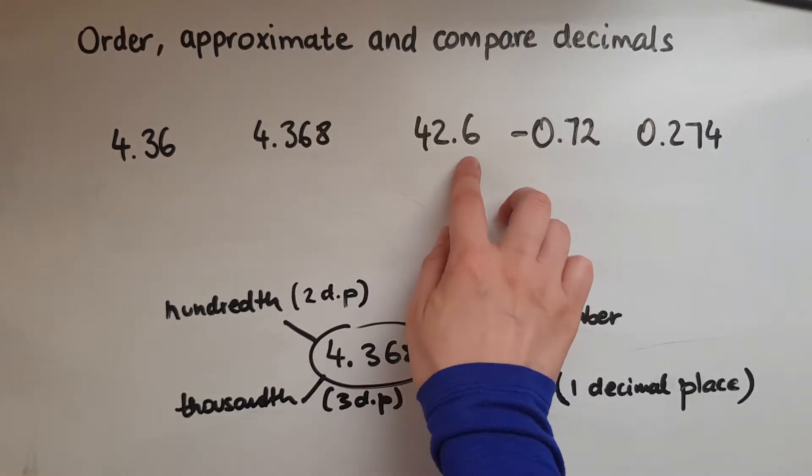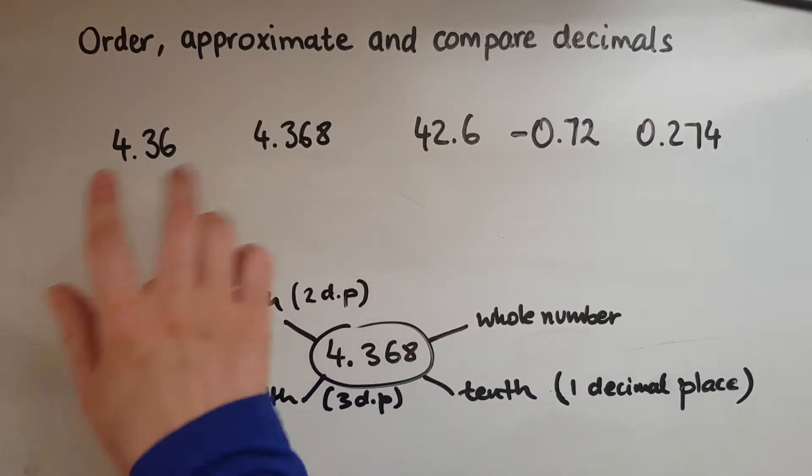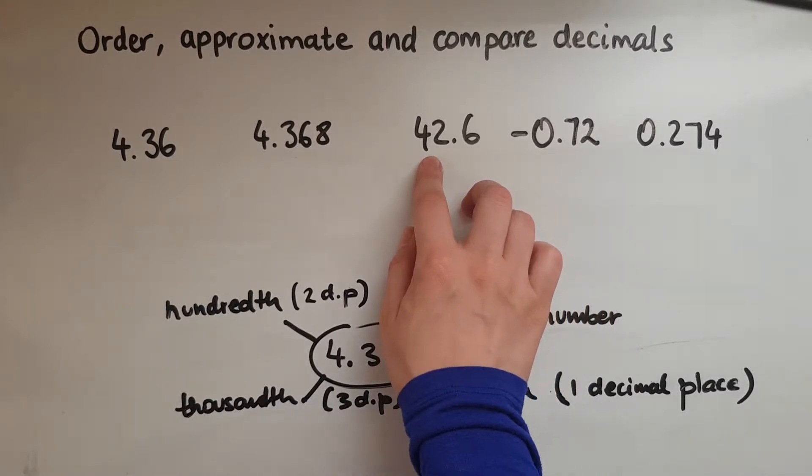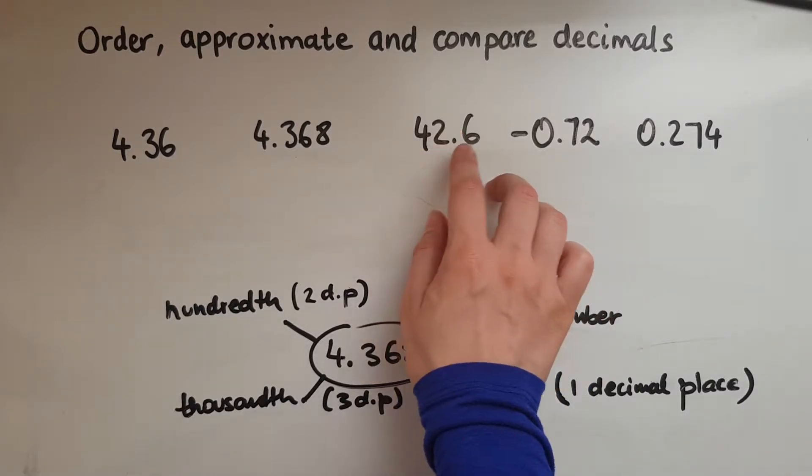Then we have 42.6, so that's bigger than these two because we have 42 whole ones. If it was money it'd be £42 and then 60 pence.